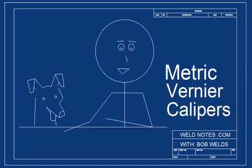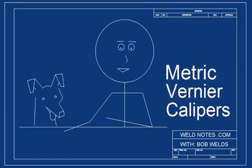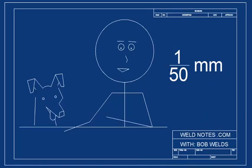Today we're going to look at a metric vernier designed to measure to the nearest 1/50th of a millimeter. That is 0.02 millimeters. See how 1 divided by 50 equals 0.02?